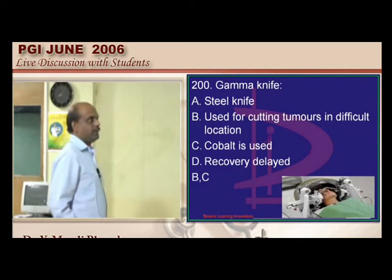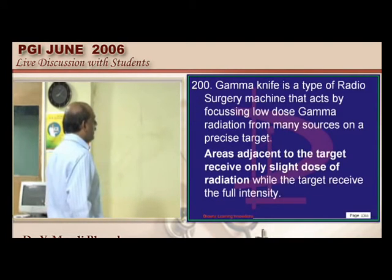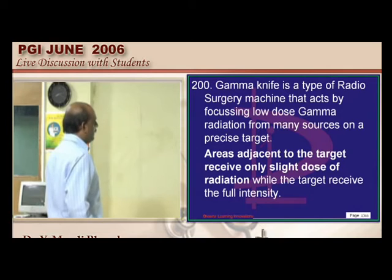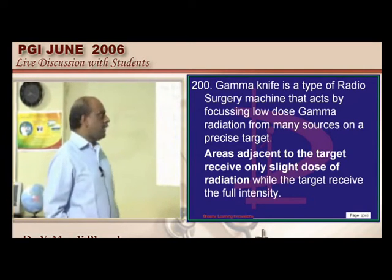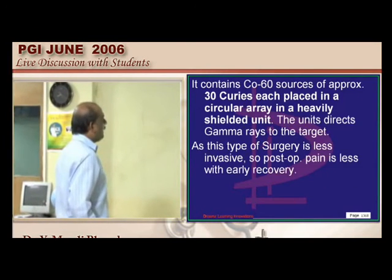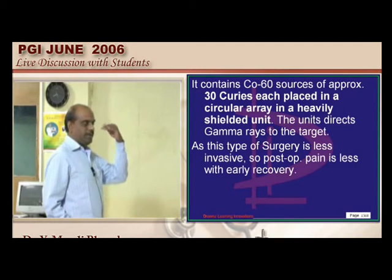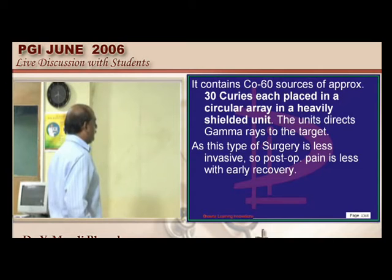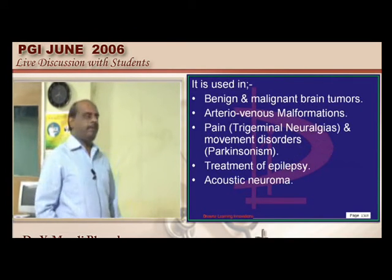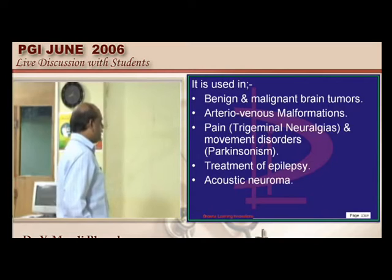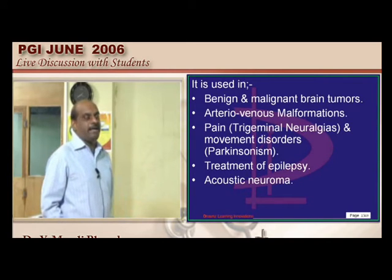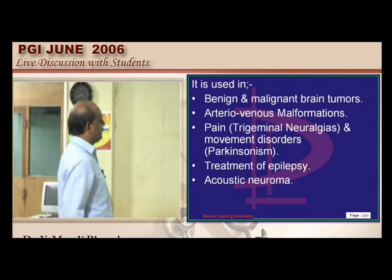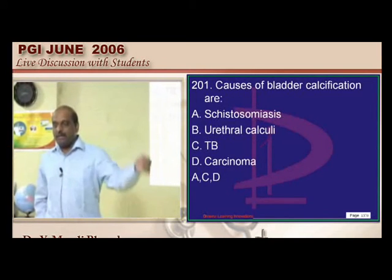The gamma knife has no actual knife — it cuts tumors using radiation from cobalt-60, with 30 curies placed in a circular array in a heavily shielded unit, used as part of radiotherapy. It is used for benign and malignant brain tumors, AV malformations, pain such as trigeminal neuralgia, epileptic focus ablation, and acoustic neuroma.